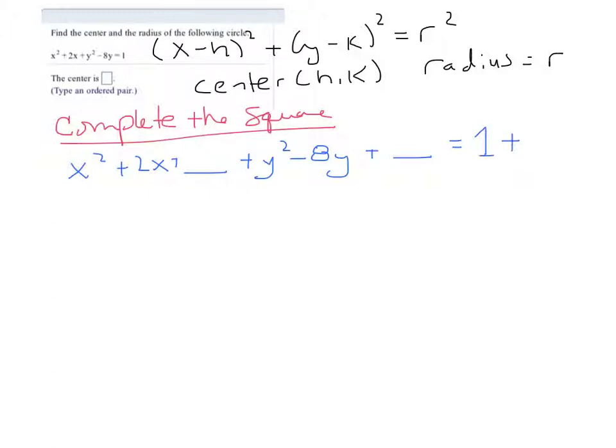And then because I have a blank on the left that I added, I also have to add the same amount on the right. So this blank associates here, this one associates here. So what I do to complete the square is I take half of my linear term. So half of 2 is a positive 1, and I square this value.